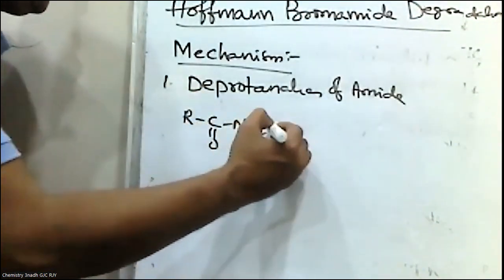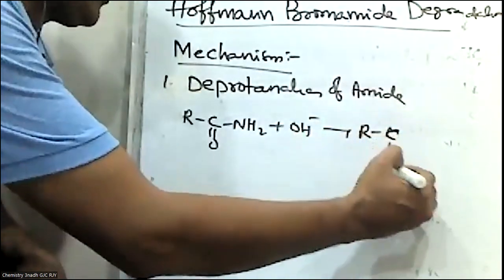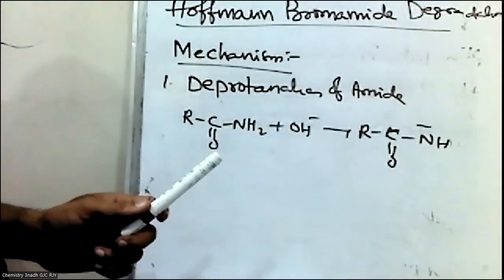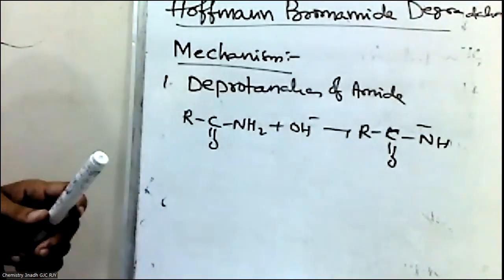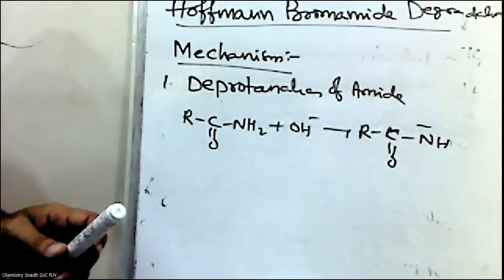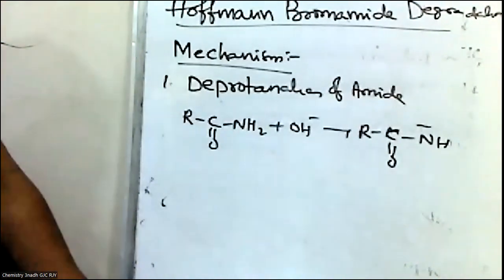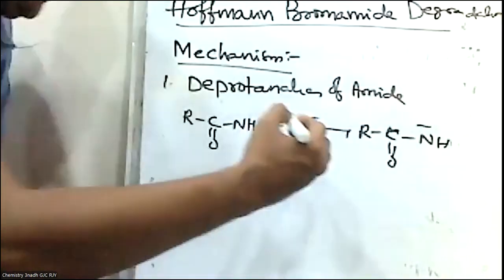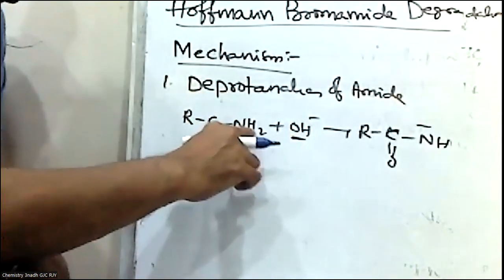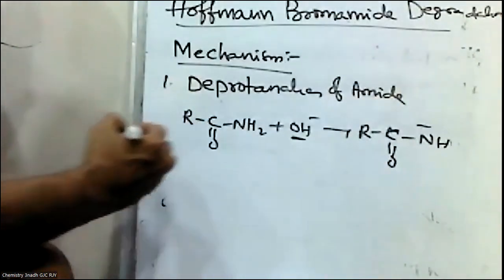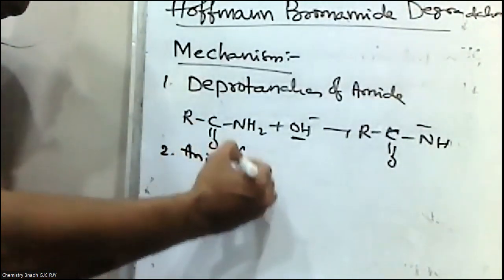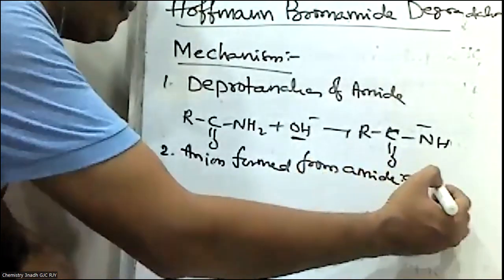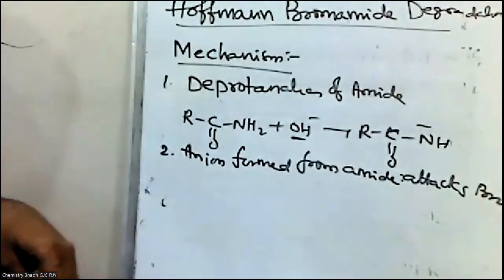When amides are treated with a strong base, the amide loses a proton and forms an anion — an RCONH⁻ intermediate. The OH⁻ ion attacks the proton from the NH2 group of the amide and forms the corresponding anion. In step 2, the anion formed from the amide attacks the bromine molecule.